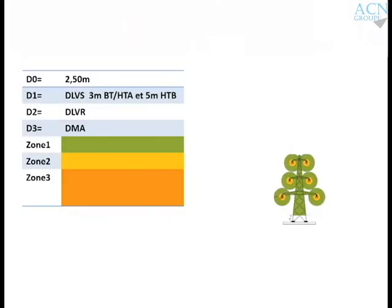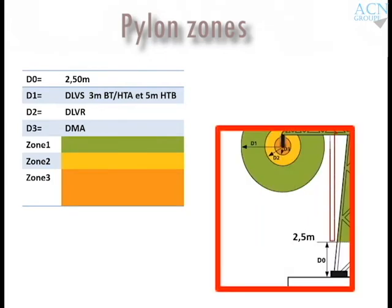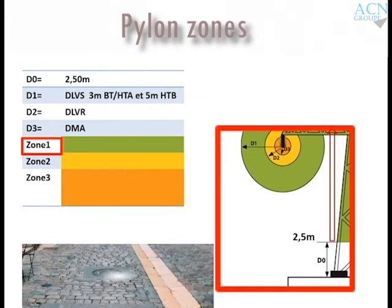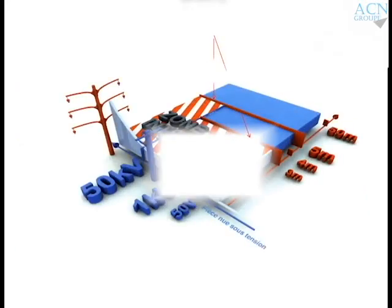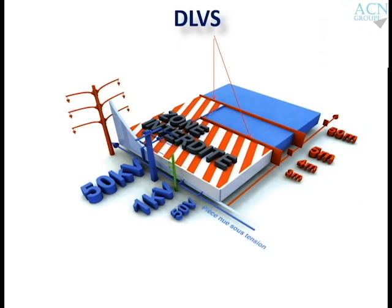Interior zones — Minimum Approach Distance (MAD): In low voltage, it sets the limit of Zone 1 and the whole of Zone 4, which means 0.3 meters from bare energized conductive components. In high voltage, Zone 3 up to the limit with Zone 2, it is fixed at 0.6 meters from the bare energized conductive components.